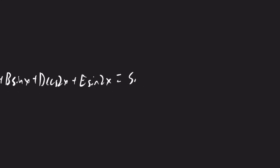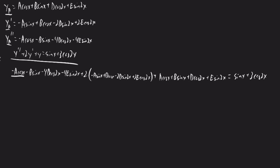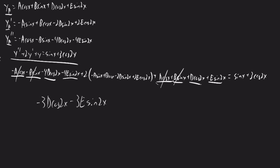And that was all equal to sine x plus 3 times cosine 2x. Some of these terms will cancel: negative a cosine x and positive a cosine x cancel, and negative b sine x and positive b sine x cancel. Some terms will combine: negative 4d cosine 2x and positive d cosine 2x give negative 3d cosine 2x, and negative 4e sine 2x and positive e sine 2x give negative 3e sine 2x. Distributing the 2 gives minus 2a sine x plus 2b cosine x minus 4d sine 2x plus 4e cosine 2x.